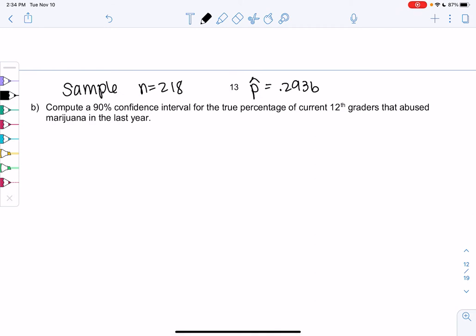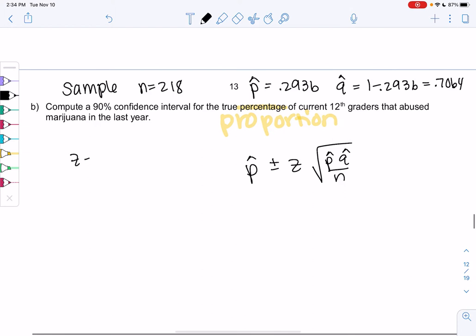So we want to compute a 90% confidence interval for the true percentage of 12th graders that abused marijuana in the last year. And I just want to show you how confidence intervals were actually giving us similar results. The confidence interval was P hat plus or minus C times the square root of P hat Q hat over N. So we need Q hat which is 1 minus 0.2936 or 0.7064, and then we'll find the Z score.